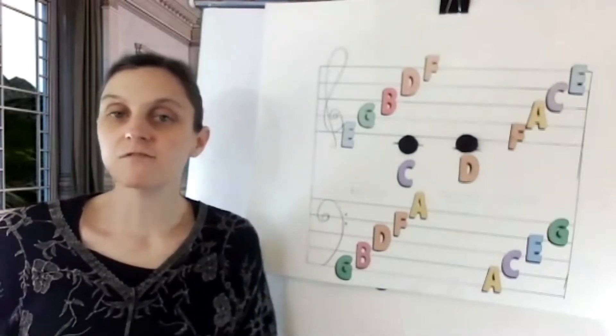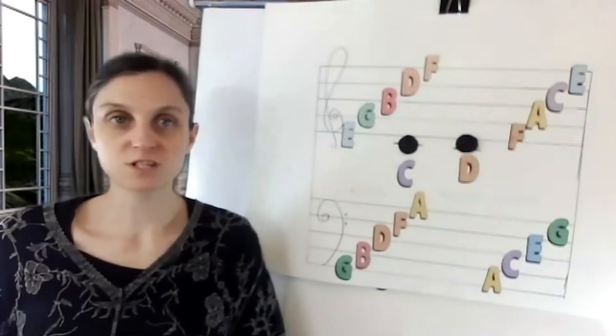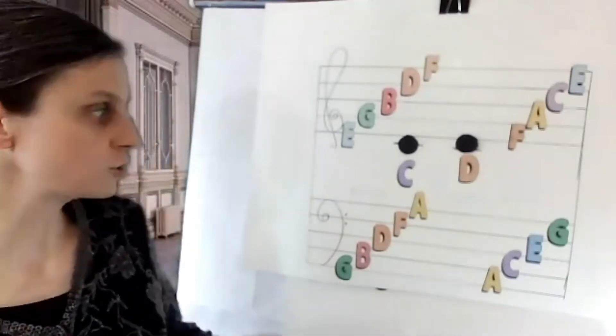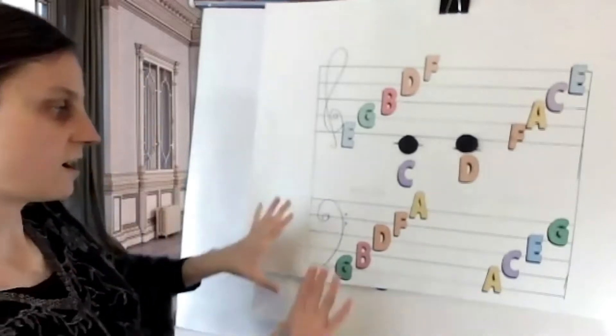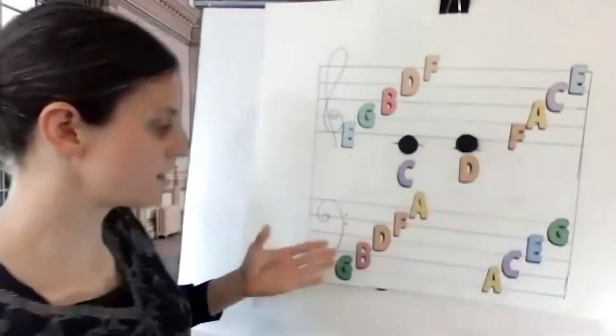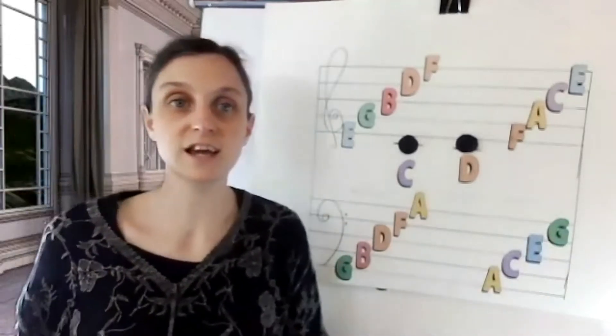The bass staff has five lines and four spaces. Now the bass clef looks like this right here, and the bass staff is this right here. It has all the lines and spaces together.